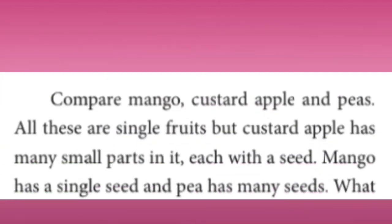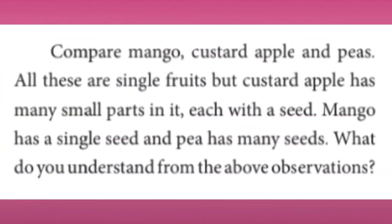Compare mango, custard apple, and peas. All these are single fruits, but custard apple has many small parts in it, each with a seed. Mango has a single seed and pea has many seeds. What do you understand from the above observation?